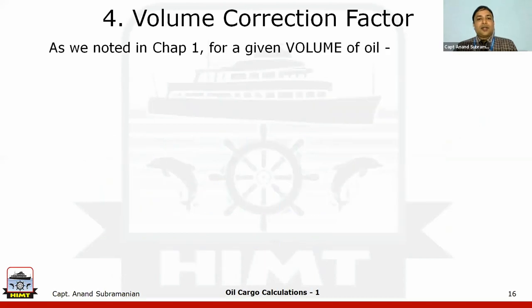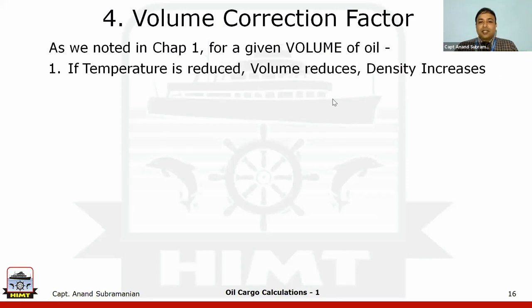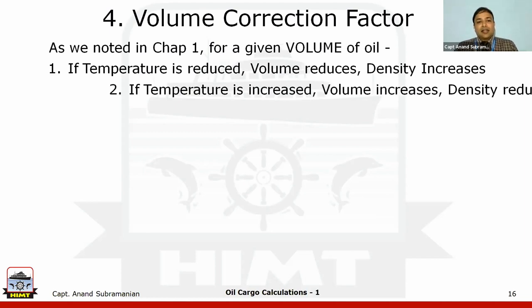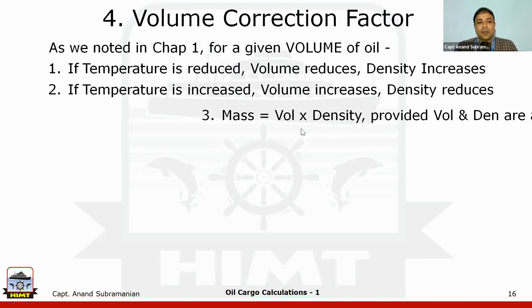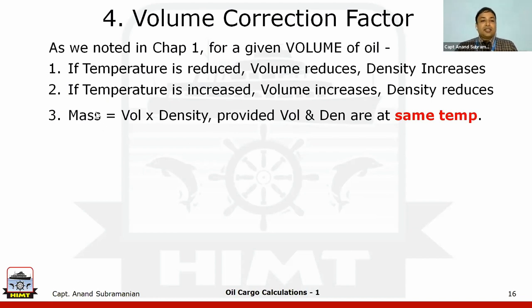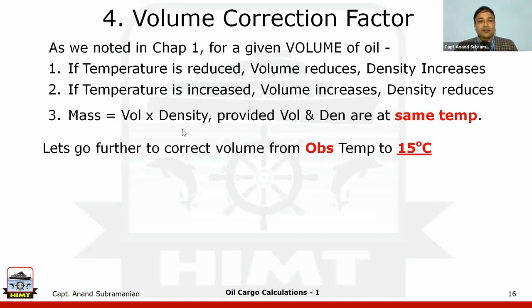Now we talk about volume correction factors. We noticed in chapter one that for a given volume of oil, if temperature is reduced the volume reduces and density increases. Conversely, if temperature increases, volume increases and density reduces. Mass = volume × density, provided both are at the same temperature. If they are not at the same temperature, we have to convert them to the same temperature — and that is what oil tanker calculations are about.